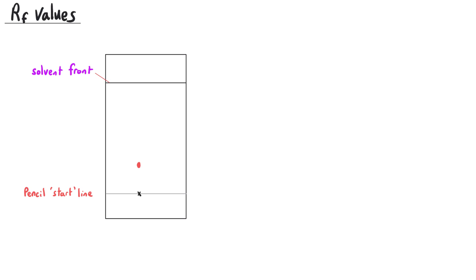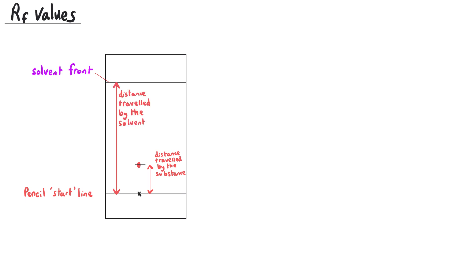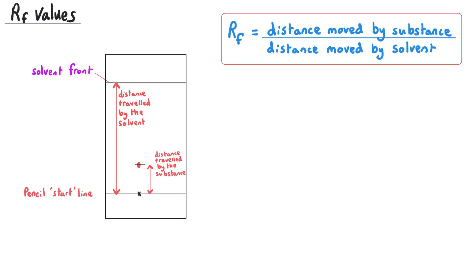In chromatography, as well as comparing the heights that different dyes have reached, we can also calculate the RF value for a particular dye. The RF value, which stands for relative front, is a numerical indicator representing the ratio of the distance travelled by a substance — the solute that is dissolving — compared to the distance travelled by the solvent front on the chromatogram. We calculate the RF value using this equation: RF equals the distance moved by a substance divided by the distance moved by the solvent.